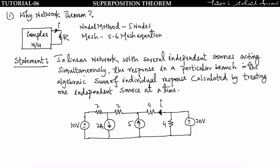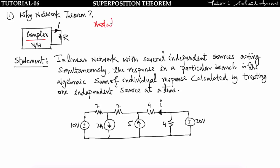Let's talk about why we use network theorems. If you take one complex network and apply nodal equations, you may get 5 to 6 nodes — maybe 10 nodes — making it difficult to solve 5 to 6 equations. Similarly, mesh analysis may give 6 to 10 mesh equations, which would be very difficult to solve. So in that case we apply network theorems to find the response across any branch more easily.